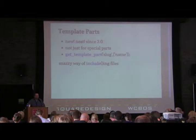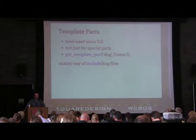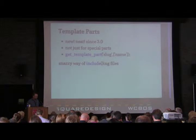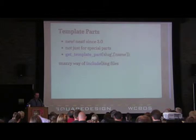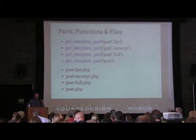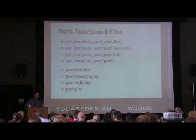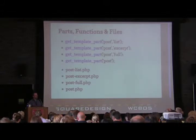In WordPress 3.0, they introduced a way to create custom template parts beyond just header, footer, and sidebar. We now have a function called get_template_part. You specify one or two parameters: the first is slug, and the second optional one is name. It's a way to include files and customize how content is displayed based on the type of content or the context you're in.